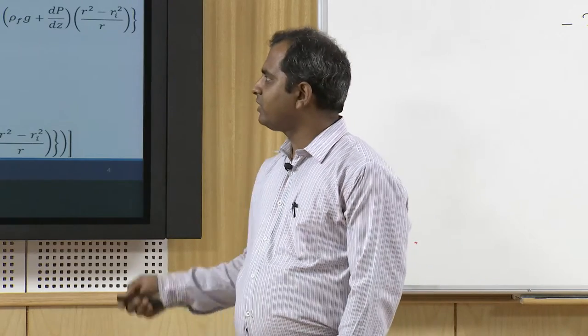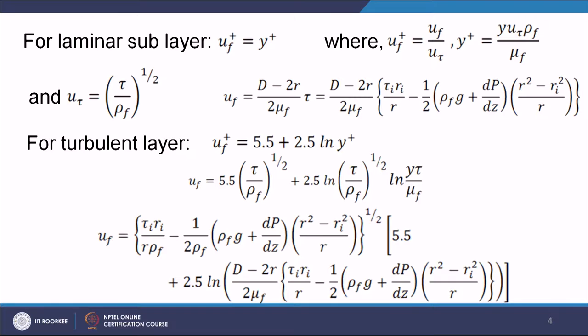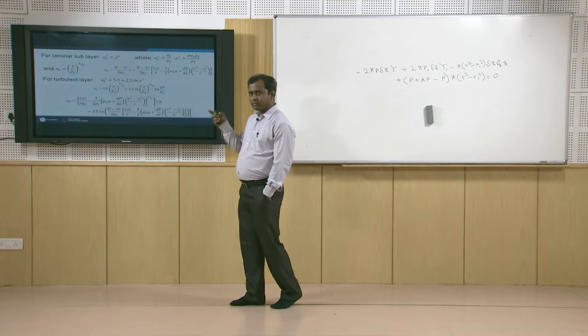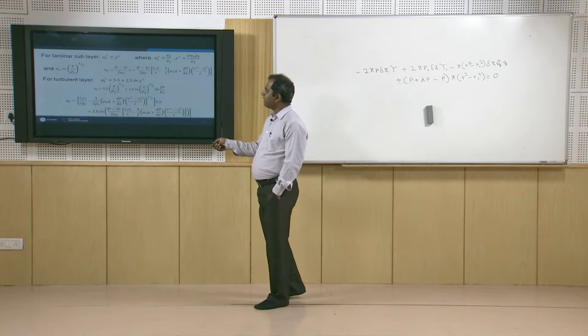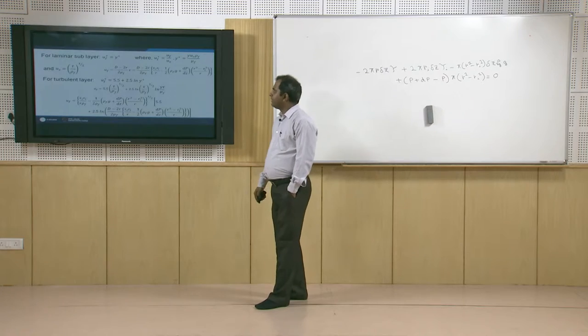A similar thing can be done for the turbulent layer. For the turbulent layer, u_f⁺ = 5.5 + 2.5 · ln(y⁺), which comes from fluid mechanics. In a similar fashion as done in the laminar sub-layer, we find u_f = 5.5 · (tau/rho_f)^(1/2) + 2.5 · ln[(tau/rho_f)^(1/2) · y · rho_f / mu_f]. Replacing tau from the previous film flow equation gives the film velocity in turbulent regime. For both laminar and turbulent regimes, we have shown how film velocity can be obtained — this is very important for the annular flow regime.